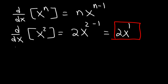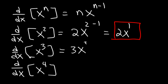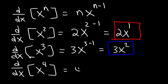Based on that, try these two. Determine the derivative of x cubed and x raised to the fourth power. So in this case, n is 3, so it's going to be 3x to the 3 minus 1, or 3x squared. Now for the next example, n is 4, so it's going to be 4x raised to the 4 minus 1, or 4x cubed.